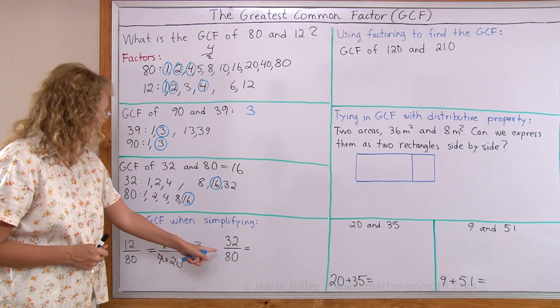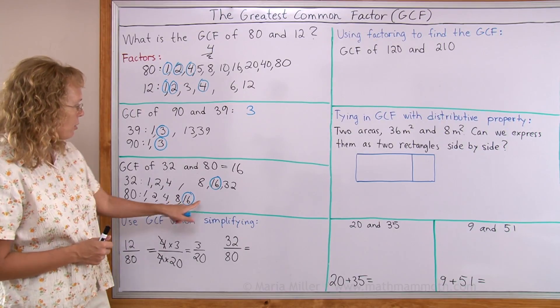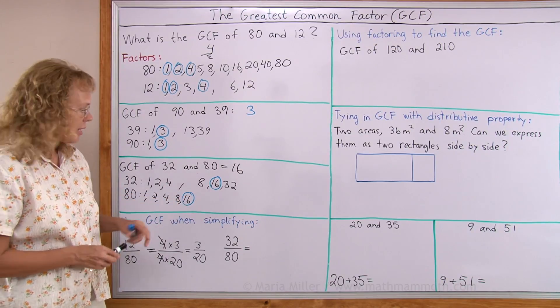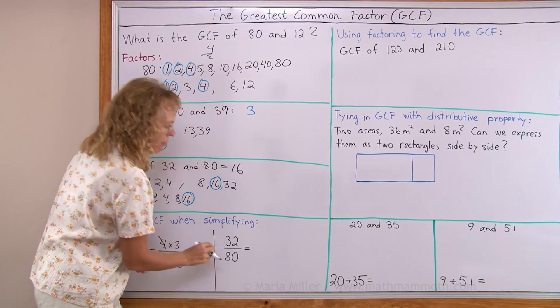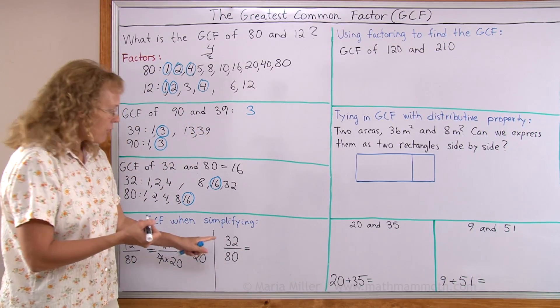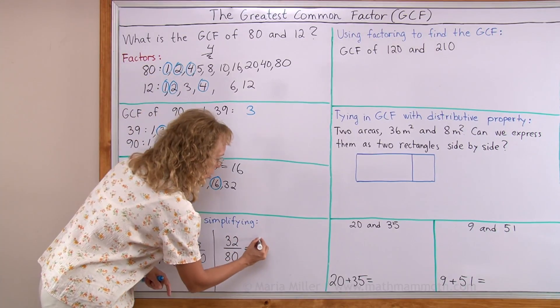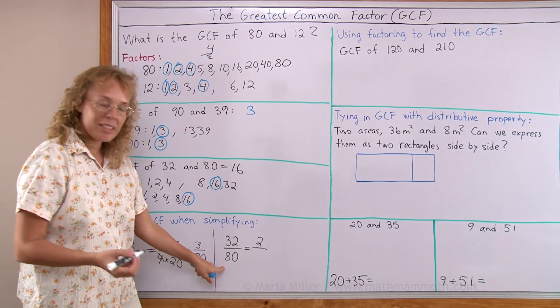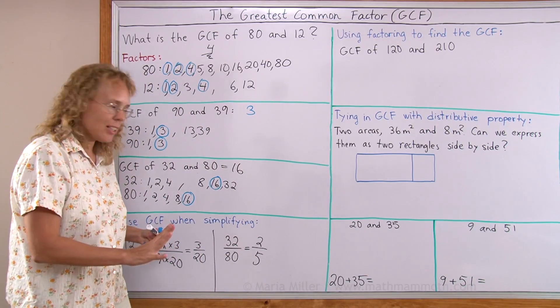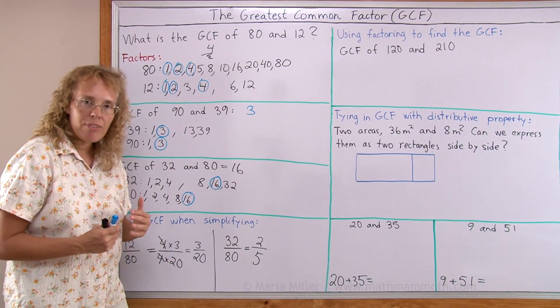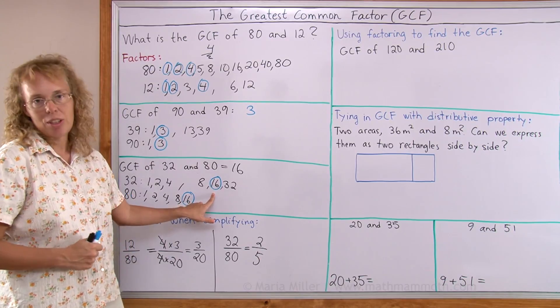The same here, 32 over 80. I already figured out the GCF—it's 16. So then, I will divide both of these by 16. 32 divided by 16 is 2, and then 80 divided by 16 is 5. I'm all done, and I cannot simplify it any further, because I did the most simplifying I could by using the GCF to start with.